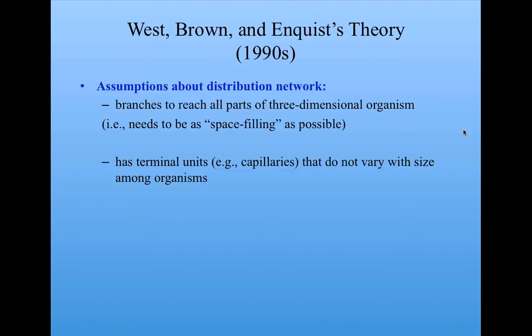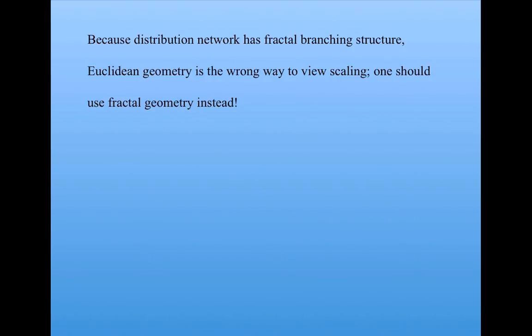Also, they assume that the terminal units in these branching structures, which are the capillaries, don't vary with size among organisms, and that seems to be the case. They assume that these networks have evolved to minimize the total energy required to distribute resources. They conclude that because the distribution network has the fractal branching structure, Euclidean geometry is the wrong way to view scaling in this case. Euclidean geometry gave rise to the two-thirds exponent in the surface hypothesis, but West, Brown, and Enquist asserted that one should use fractal geometry instead.